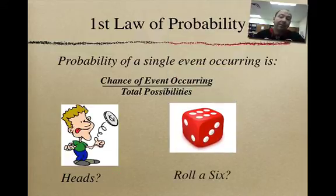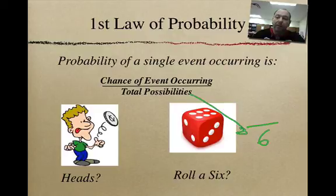All right. Well, let's take a die, for example, here. What is the probability of rolling, let's say, a six? Well, the same rules apply. Again, we make our little fraction here. There are six sides to a die, so that's the total possibilities here. And then the chance of the event occurring is there's only one six on the entire die. So we have a one out of six chance. So that means that for every six rolls of a die, at least one of them, according to probability, should be a six.